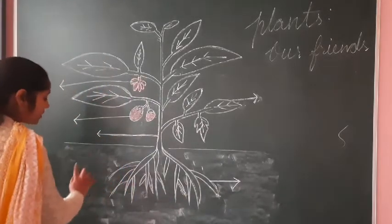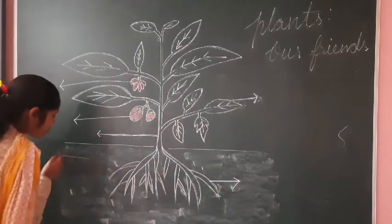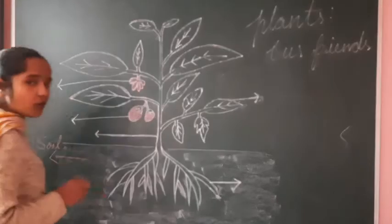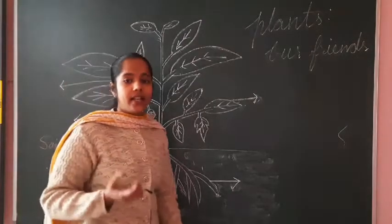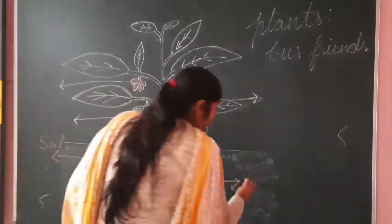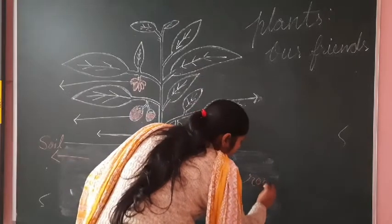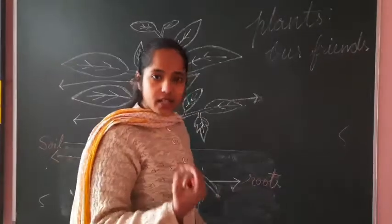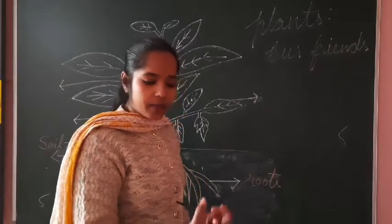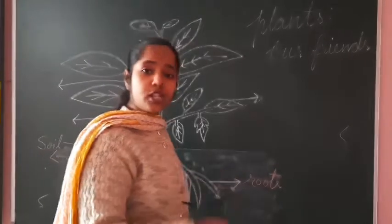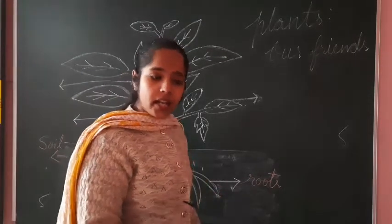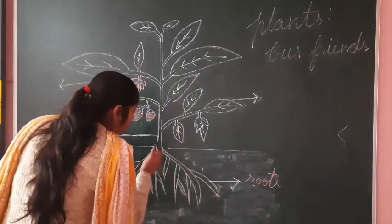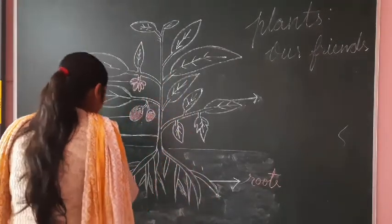Can you see — can you tell me what is this? These are soil. Soil means you know, when we say mitti, that is soil. Students, these are roots. When we sow a seed into the ground and it comes out, it sends its roots into the ground and then it comes up. Now when it comes out from here, can you see this? This is the stem.